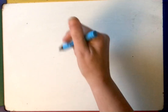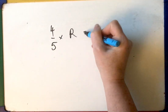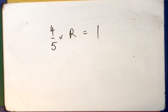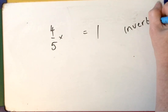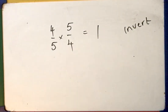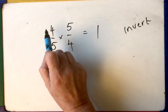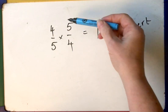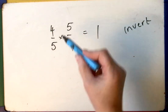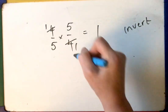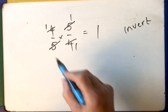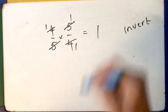Here's another one. I have four fifths and I want the reciprocal. Four fifths times its reciprocal — I'm just going to flip, invert the fraction, so it becomes five over four. Four times five is 20, five times four is 20, 20 divided by 20 is one. Also, when there's a times sign, remember we can cancel down: four divided by four becomes one, five divided by five is one, and one times one over one times one is one.